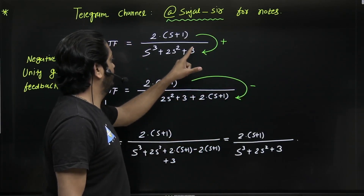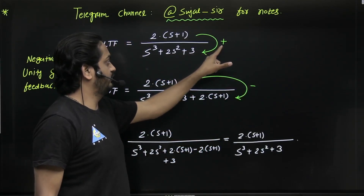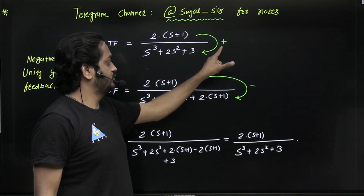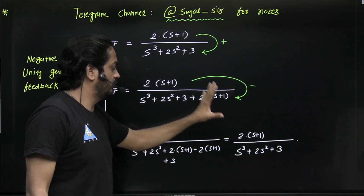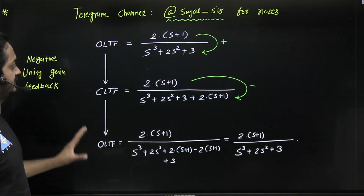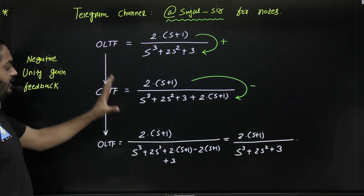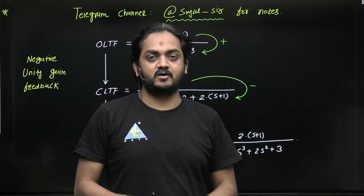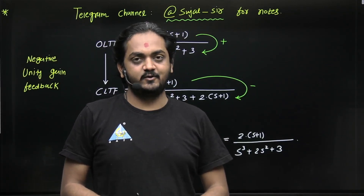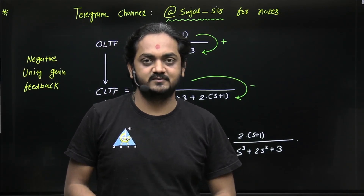So to summarize: minus sign for positive feedback, plus sign for negative feedback. You can use this shortcut. Thank you so much, guys.